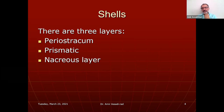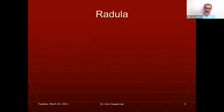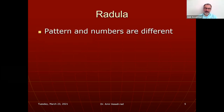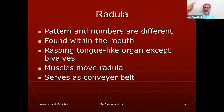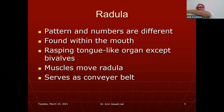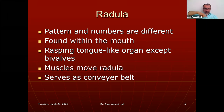Radula — either pronunciation is correct. You have not seen it in any other phylum. The pattern and number of teeth differ between species and are used for classification. Radula is found within the mouth and functions as a rasping tongue-like organ — except in bivalves, which do not have one. The muscles move the radula like a conveyor belt, bringing food to the mouth.